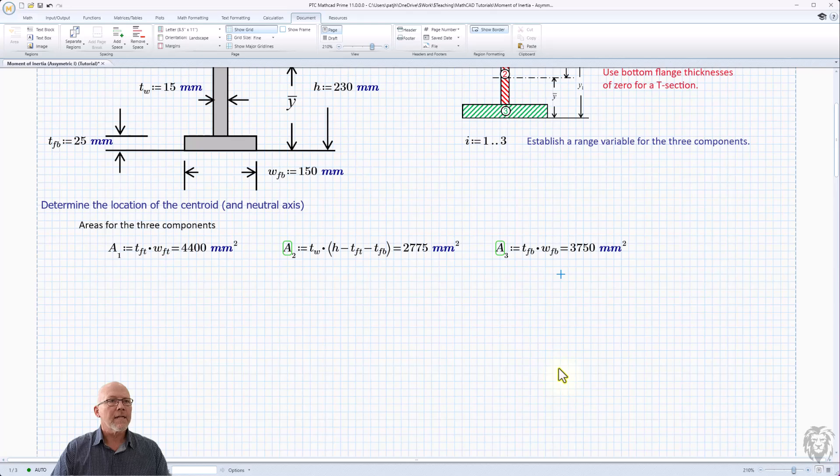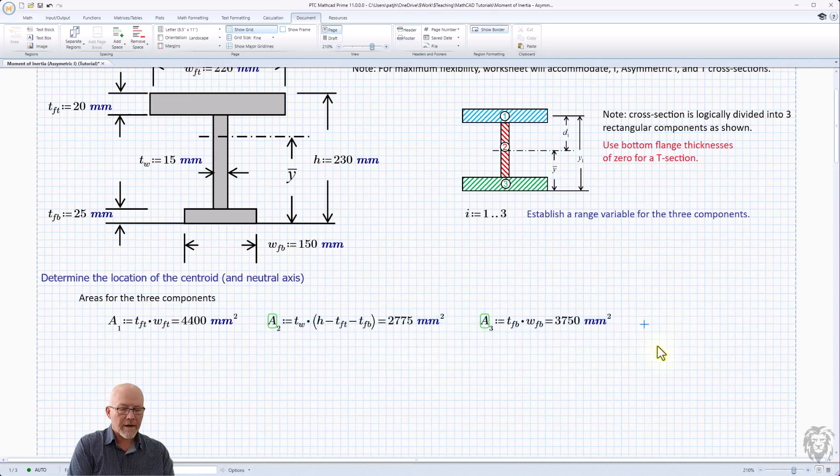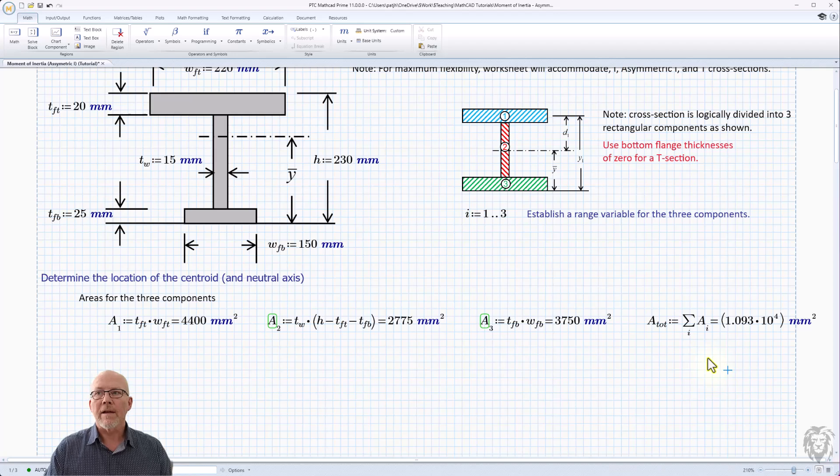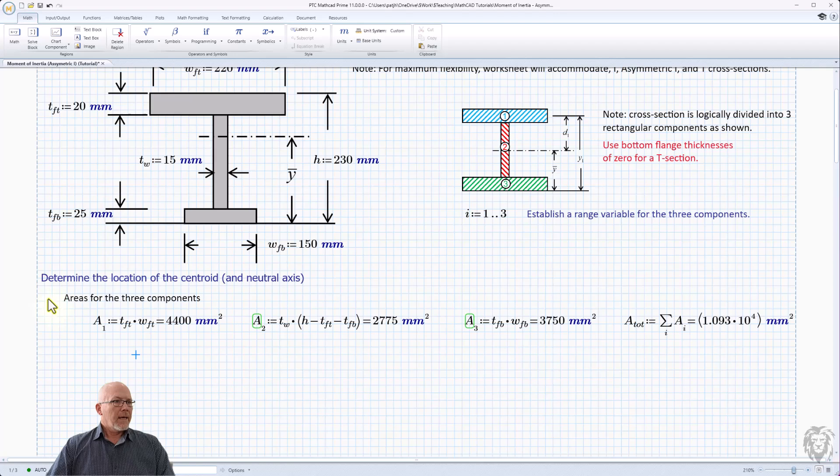So we're away to the races. Just to show you how this is all going to come together really nice and sweet and tidy, why don't we calculate the area total. I'm just going to go up to our math, choose our operators, pick up the summation sign. We're going to sum it over the range variable i, and it is just the sum of a sub i, and we hit equals, and we get our value back out. You see how nice and tidy that is without having these individual variables come across.